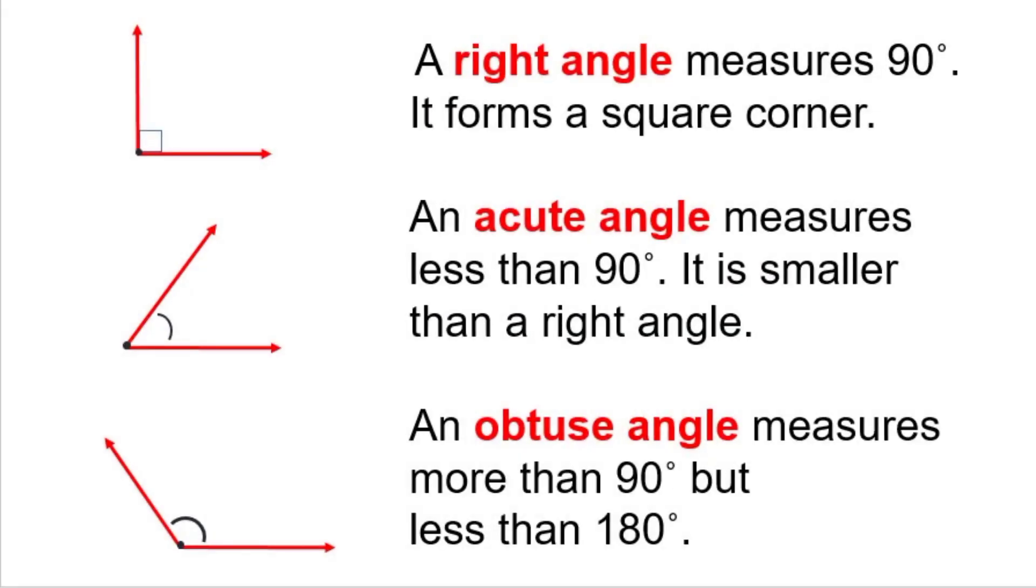There are three different types of angles. A right angle measures 90 degrees. It forms a square corner.